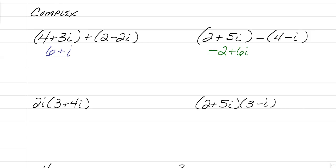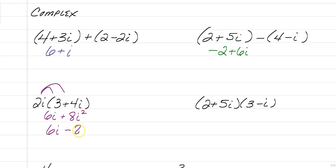When you start multiplying, that's where things change a little bit. To distribute 2i inside, we're going to have 2i times 3 is 6i, plus 2i times 4i is 8i squared. That's the part you need to remember: i squared is always negative 1. So that technically becomes 6i minus 8. Make sure we always write our answers in standard form where your real number comes first and your imaginary comes second. You have to remember that i squared is equal to negative 1.